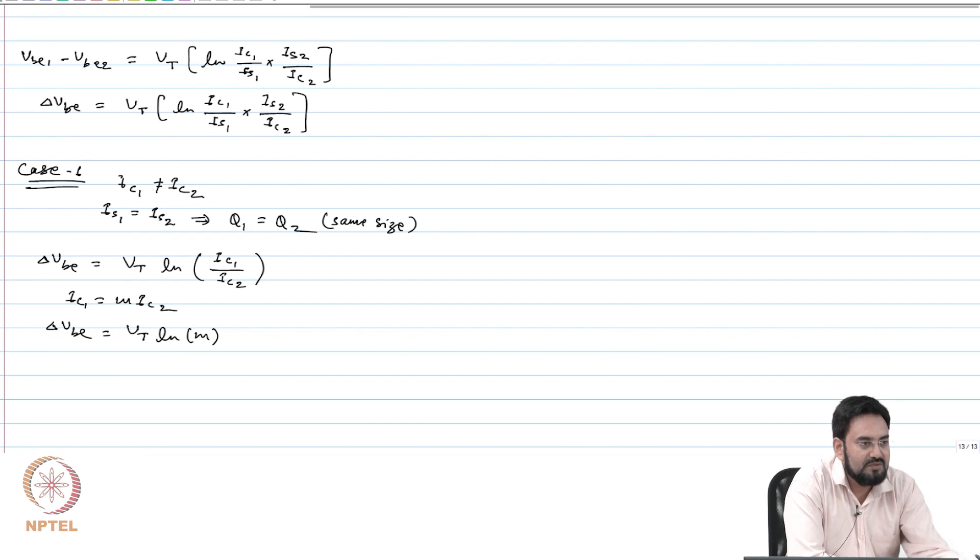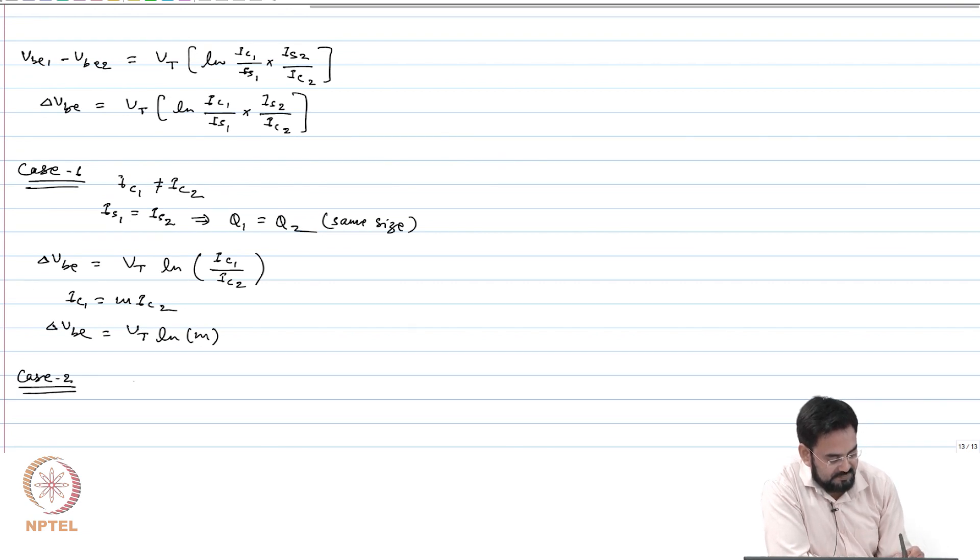So now you choose the M to change the slope. So ln M is a constant term which will define the slope for your VT.